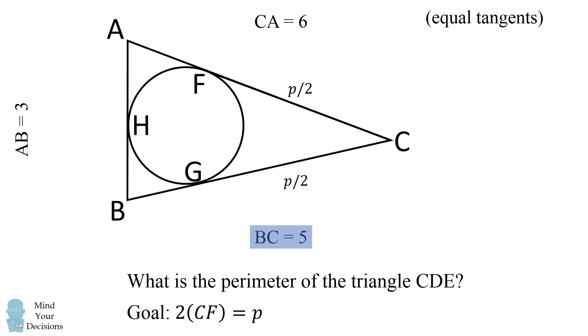Next, since BC is equal to 5, BG will be equal to 5 minus P over 2. Then we use the principle of equal tangents to get that BG and BH are equal to 5 minus P over 2. We then use that AB is equal to 3. So we get that AH is equal to P over 2 minus 2. Then we use the principle of equal tangents to get that AF is also equal to P over 2 minus 2.